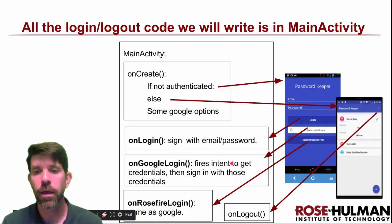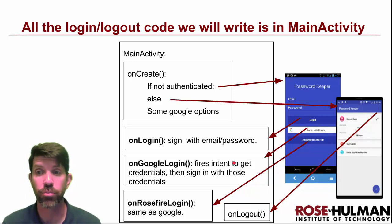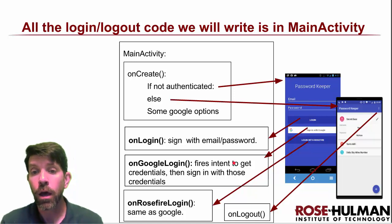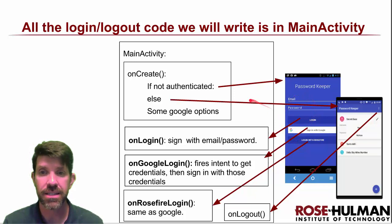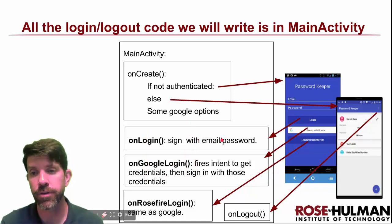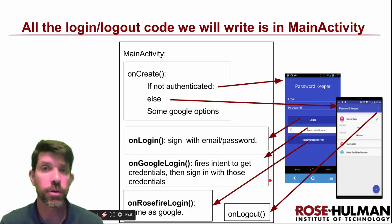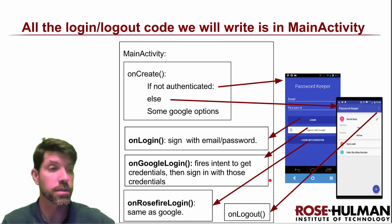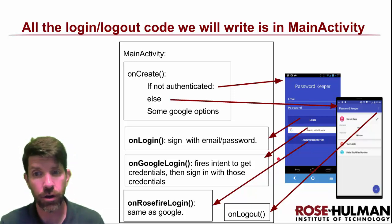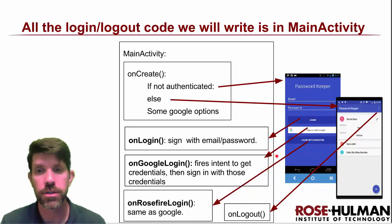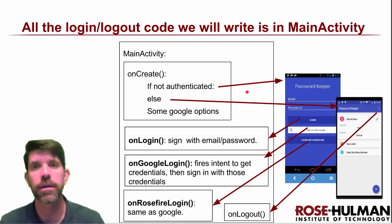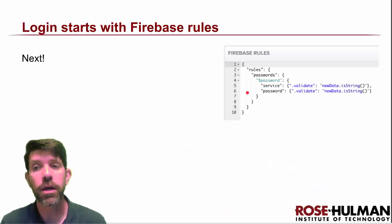If we're not authenticated, we have three options: typing an email and password combination to sign in, Google login, and Rosefire login — which brings up a page where you type in your information. All of these methods are part of an interface specified in the login page, and MainActivity is going to implement that interface. There's also an onLogout method, which is very straightforward. So essentially we have four methods to write. Login of course is going to start with rules, and that's where we're going in the next lesson.